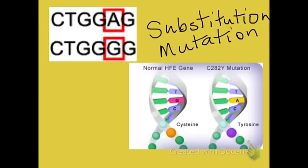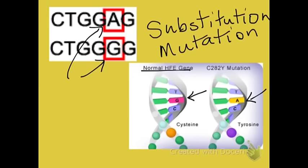Here you see the A is in place of the G — that's called a substitution mutation. The normal gene has the G in place, while the mutated gene has an A in place of the G. Notice that it makes two different amino acids, which will affect the organism.